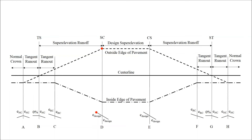Point D is the point at which the design superelevation has been reached and the entire highway width has a cross slope equal to the design superelevation. Point D represents the SC point, since the spiral is now complete and the simple arc curve begins. The distance from point B to point D is the superelevation runoff. The outside edge of pavement is now raised above the center line at the design superelevation rate, and the inside edge of pavement is now below the center line at the design superelevation rate.